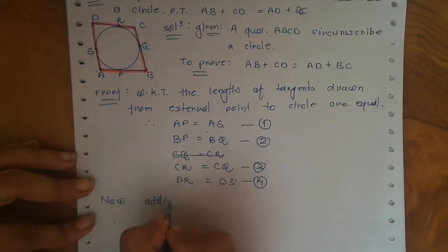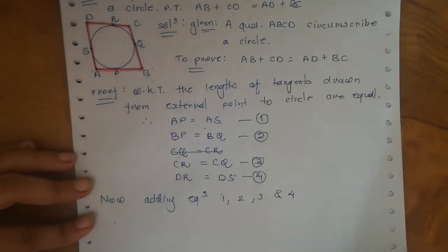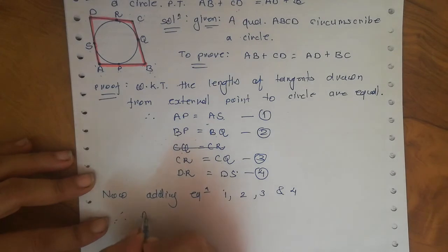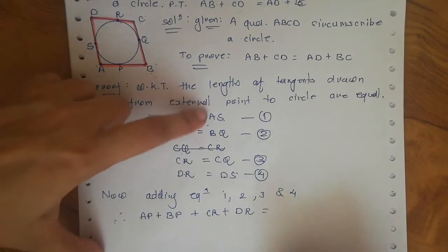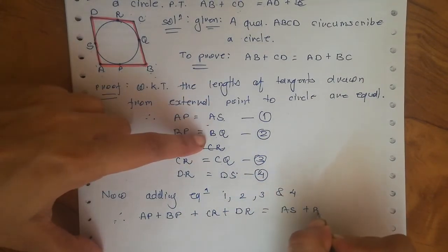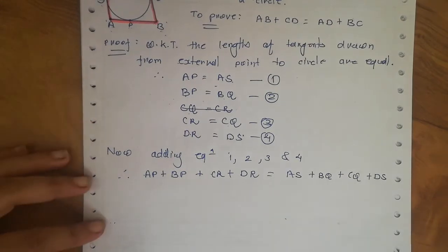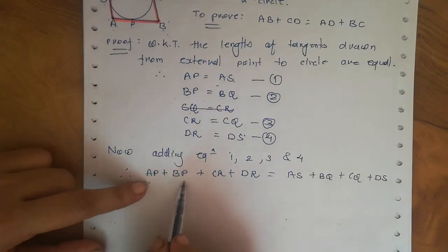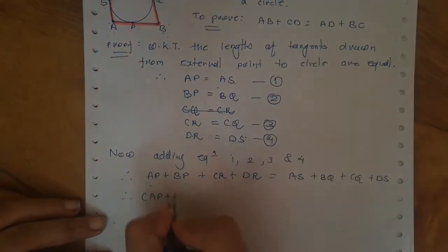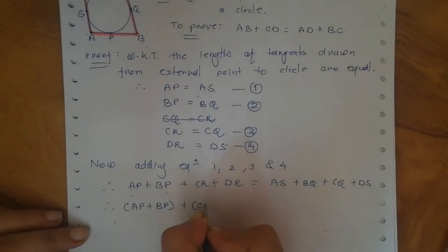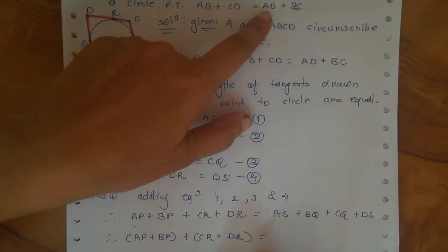Now adding equations 1, 2, 3, and 4 on both sides, what we get on the left-hand side is: AP plus BP plus CR plus DR, and on the right-hand side: AS plus BQ plus CQ plus DS.